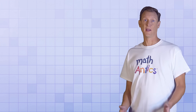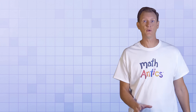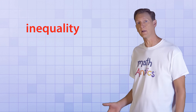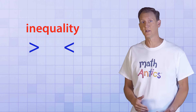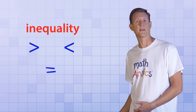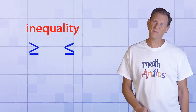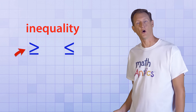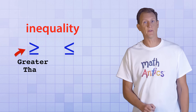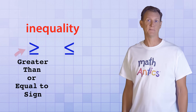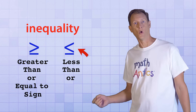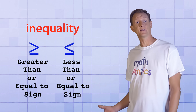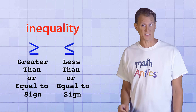Before we move on, I want to show you two other inequality symbols that can be made by combining the greater than and less than signs with the equal sign. This one is called the greater than or equal to sign, and this one is called the less than or equal to sign. You'll see why these combined symbols are needed in just a minute.